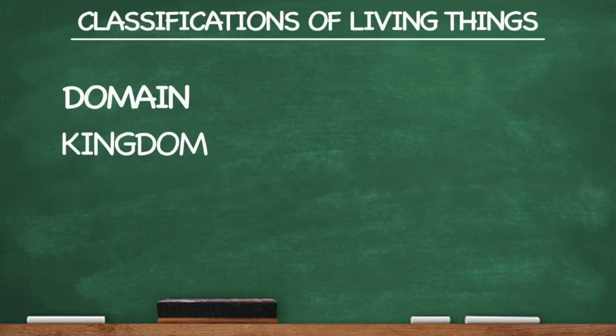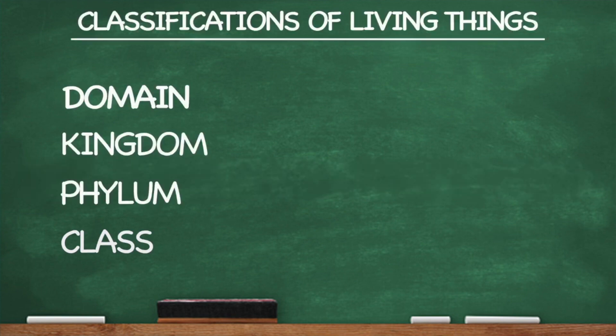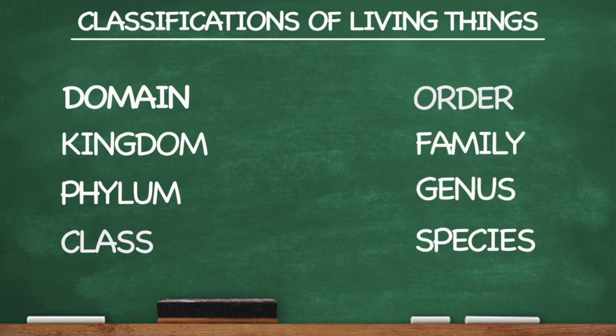Domain, Kingdom, Phylum and Class. Order, Family, Genus and Species.